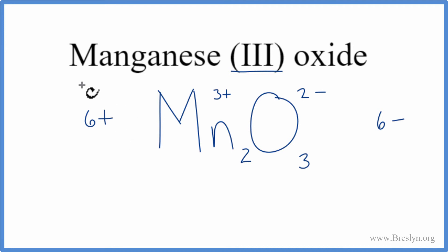So 6 plus and 6 minus, that adds up to zero, it gives us a net charge of zero. This is the correct formula for manganese 3 oxide. Let's clean it up a little bit. And that's it, manganese 3 oxide, Mn2O3.